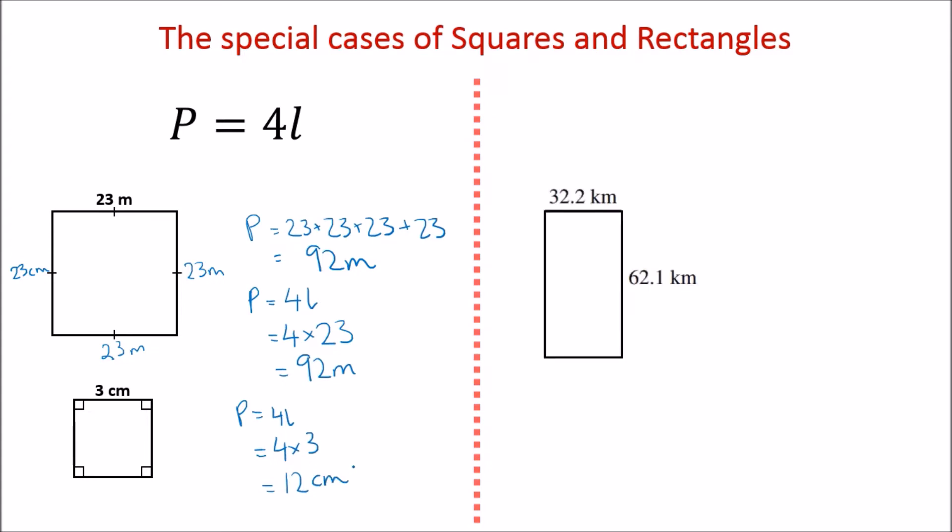Okay, rectangles. So we've got 32.2 on top, which also means because this is a rectangle—it looks like a 90 degree angle here, here, here, and here—this 32.2 kilometers would mean that this distance here is also 32.2 kilometers, and this 62.1 kilometers here means that this is also 62.1 kilometers.